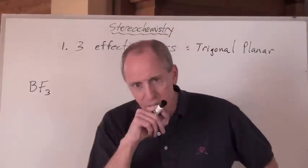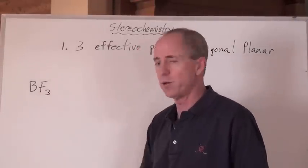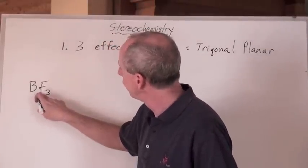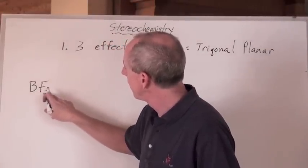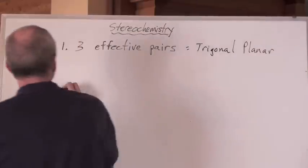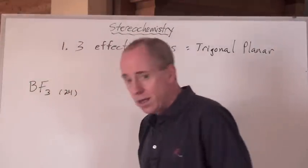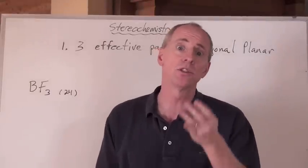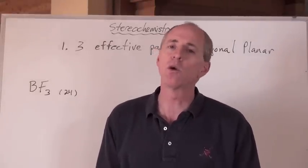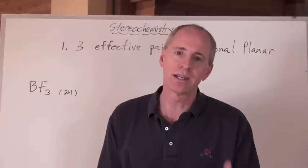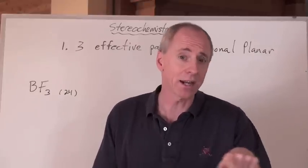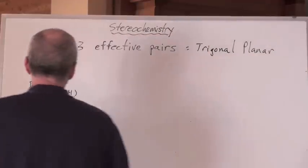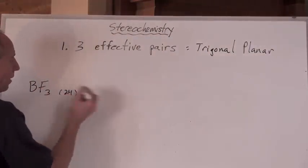Okay, three effective pairs. Now here's the thing, BF3. Boron is in group three, and it's a non-metal, and there's fluorine in group seven. Seven times three is twenty-one, plus three is twenty-four. Now, here's the deal, boron. I didn't tell you before, but boron is an exception to the octet rule, just like hydrogen is, because boron only needs to have six.